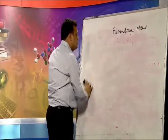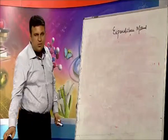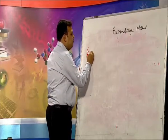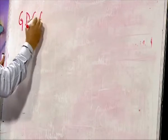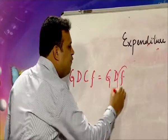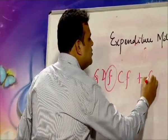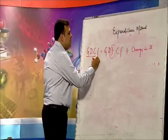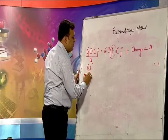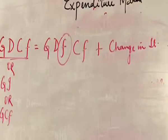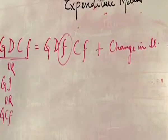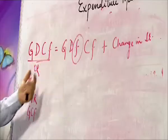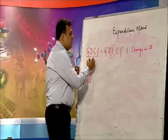An important clarification for numericals: gross domestic capital formation is the sum of gross domestic fixed capital formation plus change in stock. This is also known as gross investment or gross capital formation. As a hint — if 'fixed' is given, you have to take change in stock separately. If 'fixed' is not given, it means gross domestic capital formation is already given.